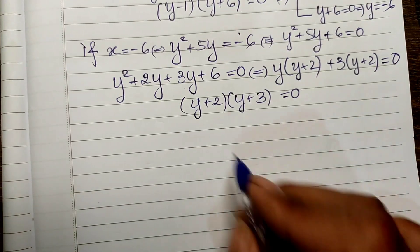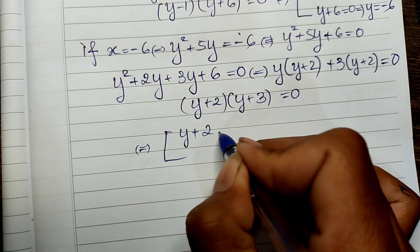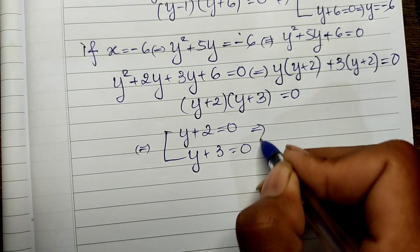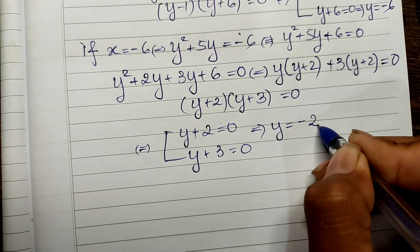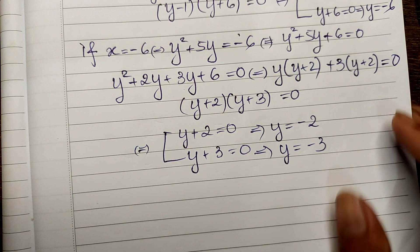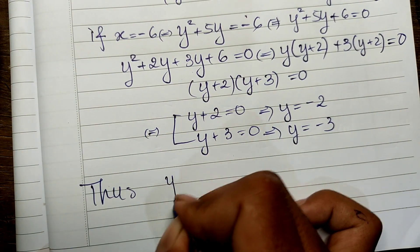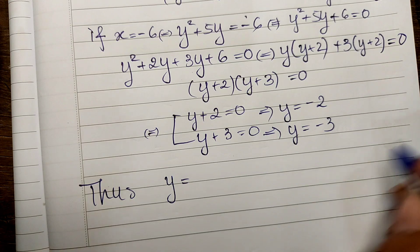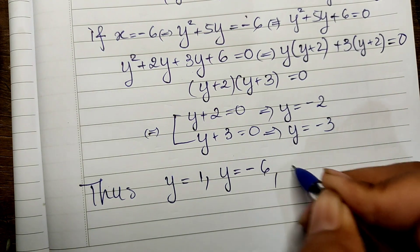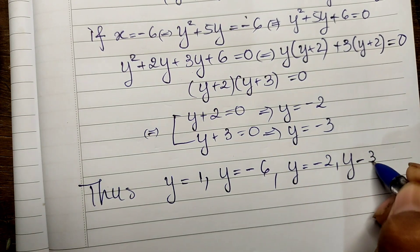Taking out the factor (y plus 2), we get (y plus 2)(y plus 3) equals zero. So the two factors give us y plus 2 equals zero and y plus 3 equals zero, meaning y equals minus 2 and y equals minus 3.